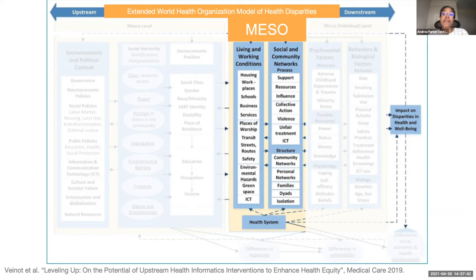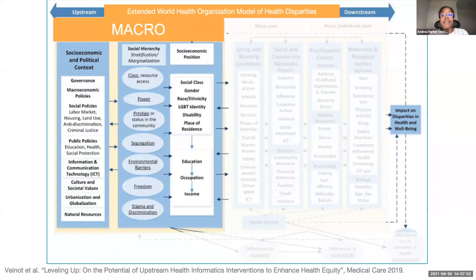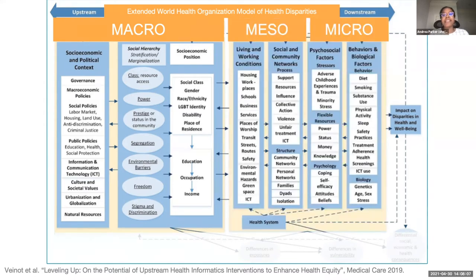Families are important social environments for encouraging positive physical activity behaviors and the associated health benefits. At the macro level, social, political, economic, and cultural mechanisms create unequal exposure to factors that inhibit wellness, such as experiences of stigma, racism, and unequal distribution of resources. Together, these macro, meso, and micro level determinants of health illustrate the complex challenge of trying to improve the well-being of marginalized and underserved populations.